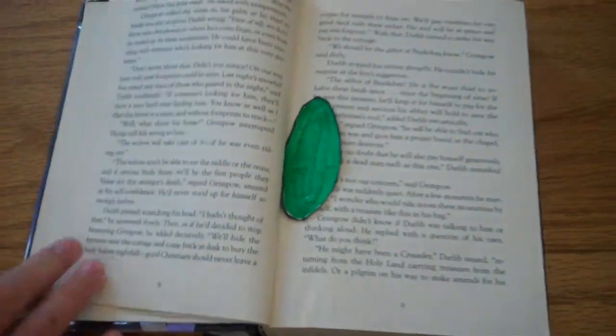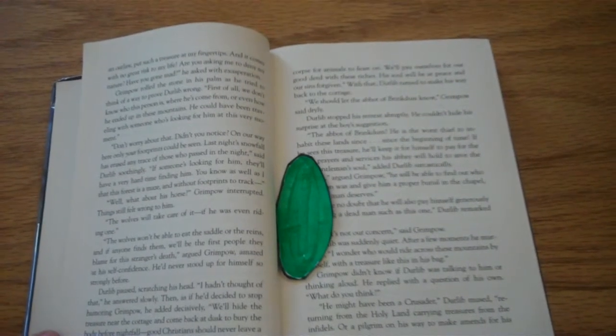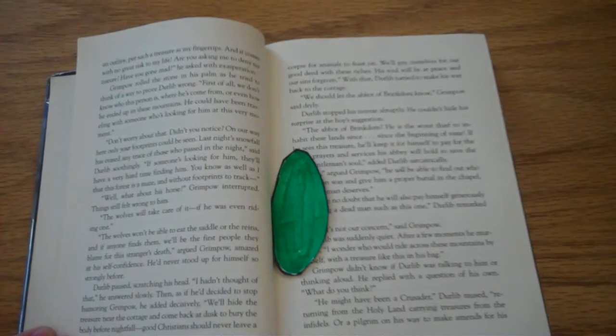Before his discovery, Grimpow was just an introvert, shy, quiet kid. After finding the stone, he turned into a confident, brave young man. On page A of the book, it reads that Grimpow was amazed at his own self-confidence. He'd never stood up for himself so strongly before.